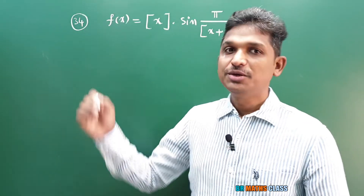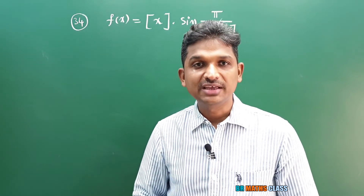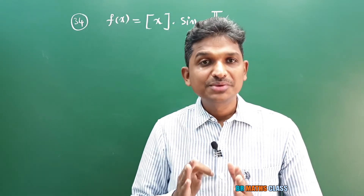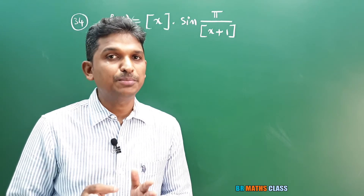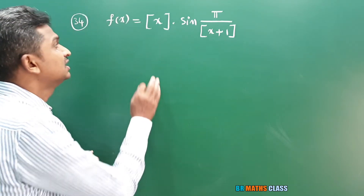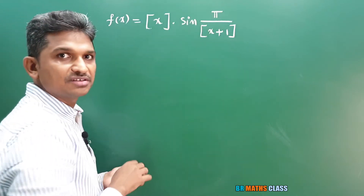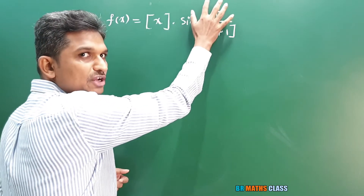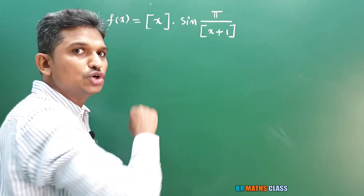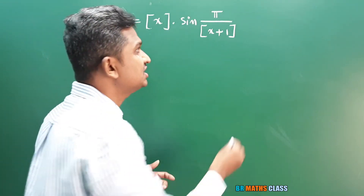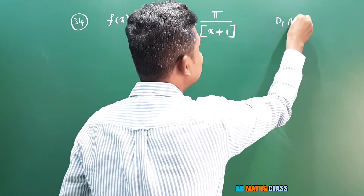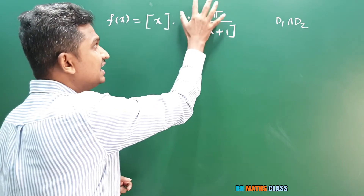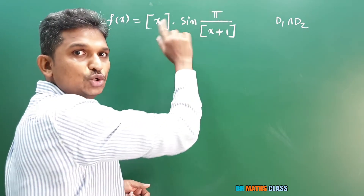Question 34: you may worry because the greatest integer function (floor function) is there, but this problem is actually easy. Always believe in the concept and apply it. This is f(x) × g(x). If d1 is the domain of f(x) and d2 is the domain of g(x), the domain of their product is d1 ∩ d2. So I will calculate the domain of each part and then take their intersection.